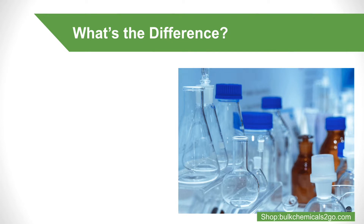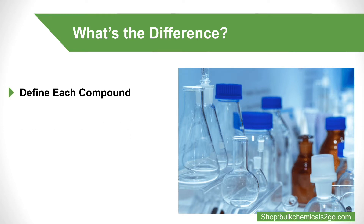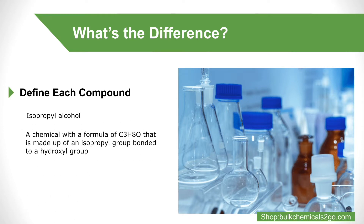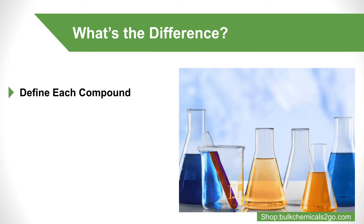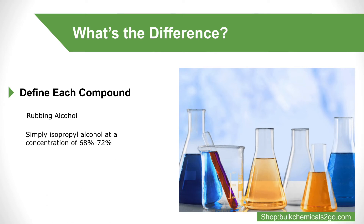To discover the distinction between isopropyl alcohol versus rubbing alcohol, first we must define each compound. Isopropyl alcohol is a chemical with a formula of C3H8O, made up of an isopropyl group bonded to a hydroxyl group. A hydroxyl group is what makes the substance an alcohol. Rubbing alcohol, however, has a less formal definition. It is often simply isopropyl alcohol at a concentration of 68% to 72%. The CDC gives rubbing alcohol a more exact definition: a blend of 70% isopropyl alcohol and 30% water.